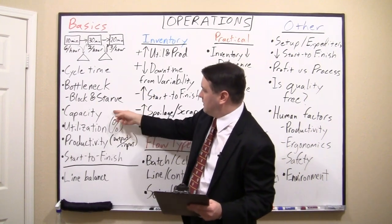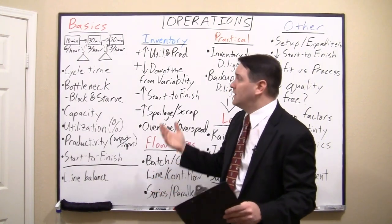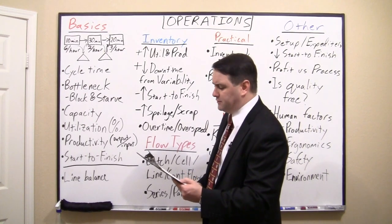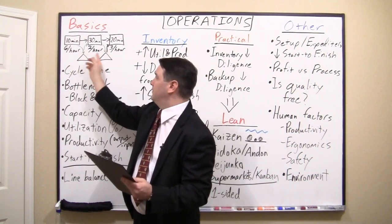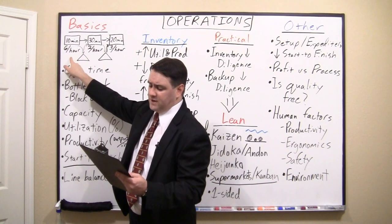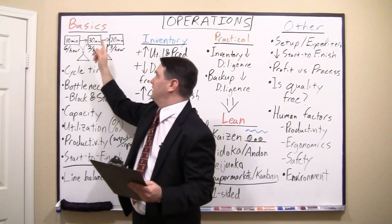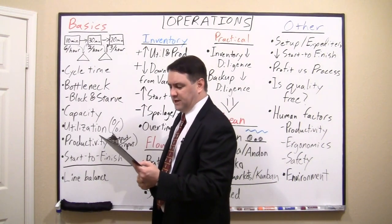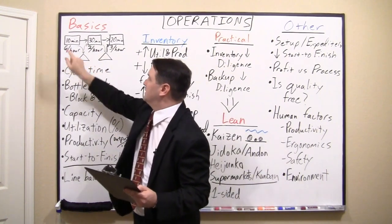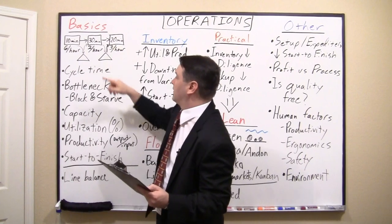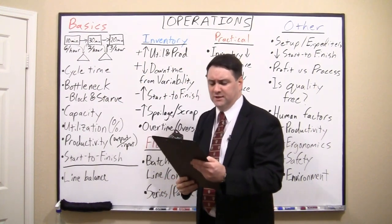The next concept is utilization — how much of your resource you're using. We're going to talk about people or machinery. We want to use 100% of the bottleneck because we want it running all the time. The first operation is only at 33% utilization because they work 10 minutes and then wait 20 minutes. So the whole system would be at about 66% utilization: 100% of the bottleneck, 33% of the first station, and 66% of the last station since they're working 40 minutes per hour.